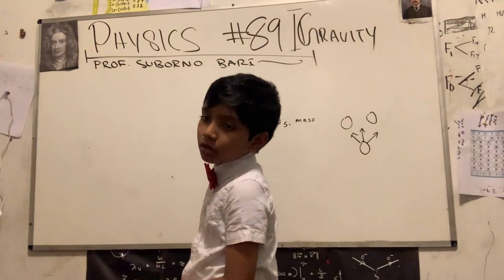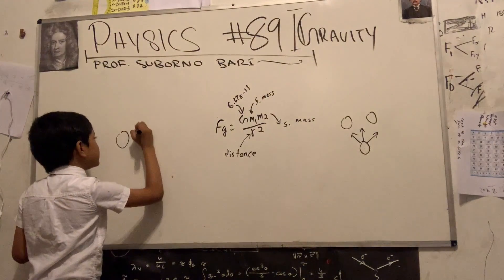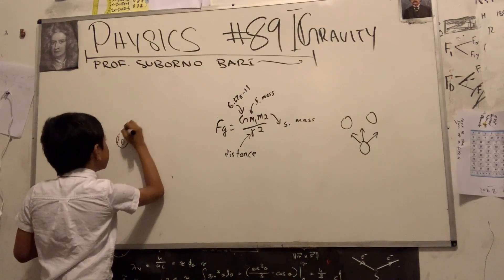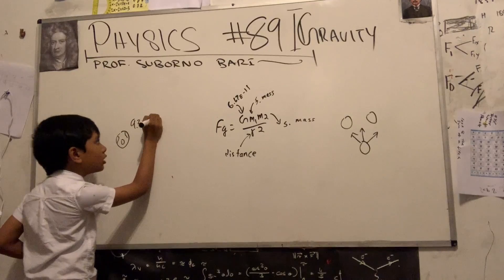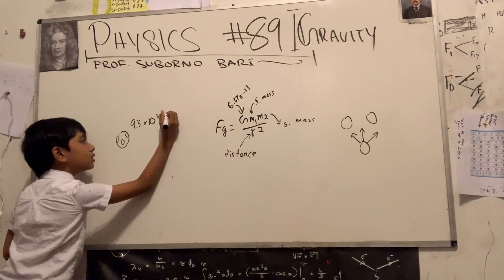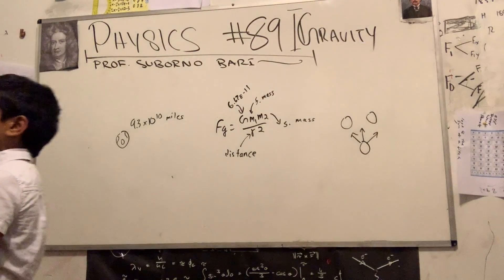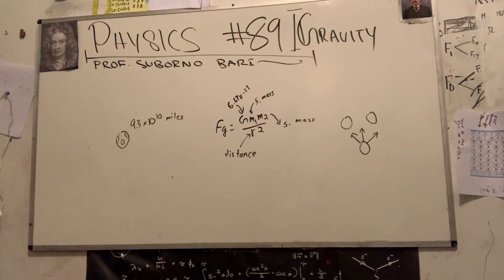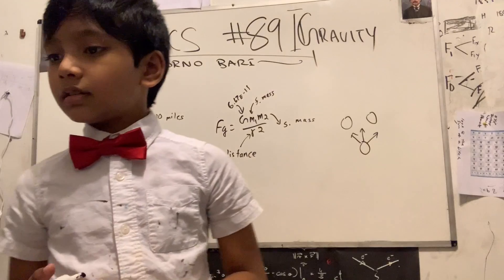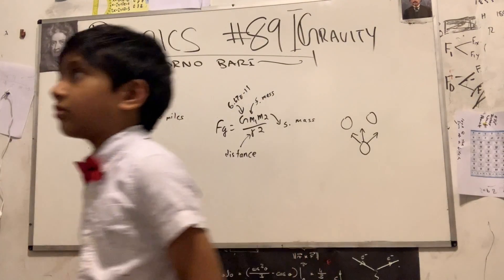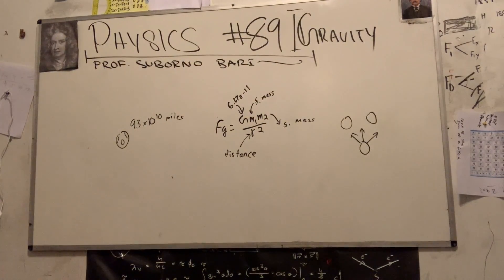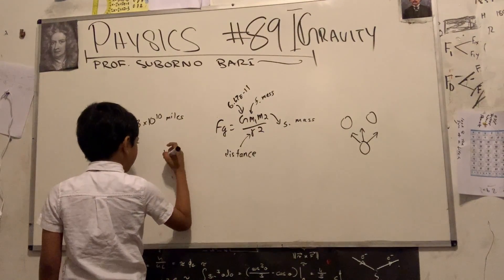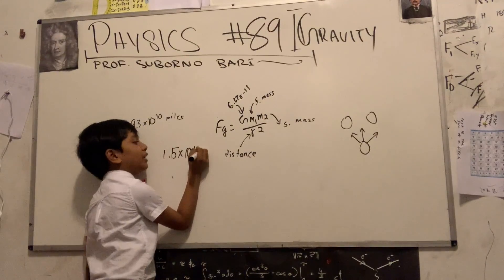So we know that the Earth is 93 million miles away from the sun. So, but for conversions, I want to convert back to meters. So what are 93 million miles in meters? Uh, I don't know. It's very easy. What is it, Professor? 93 million miles in meters. Million or billion? Million. Oh yeah, million. Miles to meters, right? It's 1.5 times 10 to the 11. 1.5 times 10 to the 11 meters.